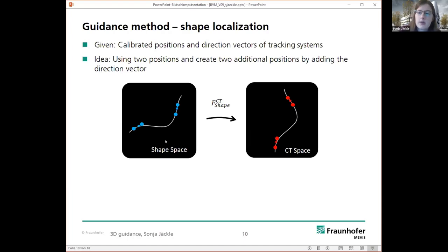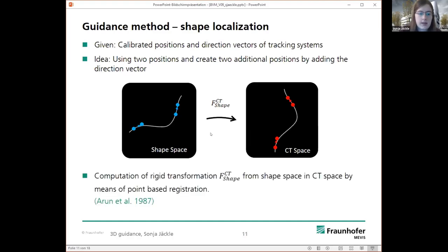And in the same way, we have this also in the shape space, the two corresponding positions from the EM sensors, and also two additional points with the direction vectors. And then, in the end, we are using a point-based registration to compute a rigid transformation to transform the shape to the EM tracking coordinates in the CT space.